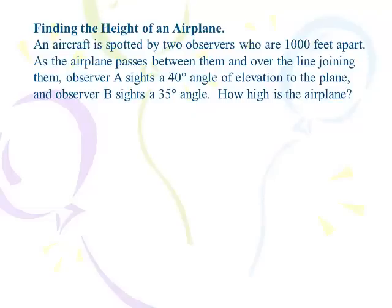Here's our first problem, finding the height of an airplane. An aircraft is spotted by two observers who are 1,000 feet apart. As the airplane passes between them and over the line joining them, Observer A cites a 40-degree angle of elevation, and Observer B cites a 35-degree angle of elevation.